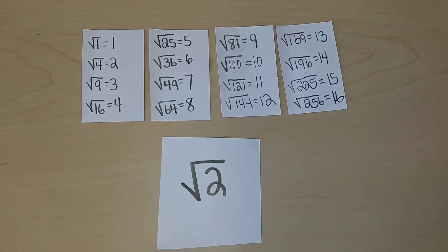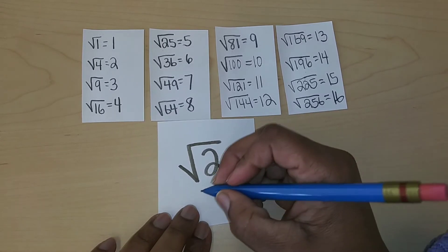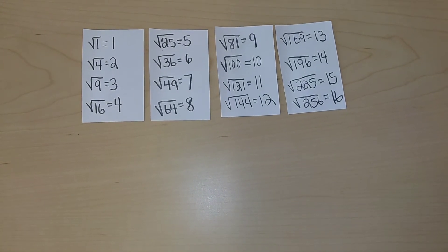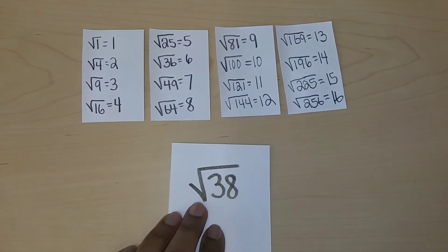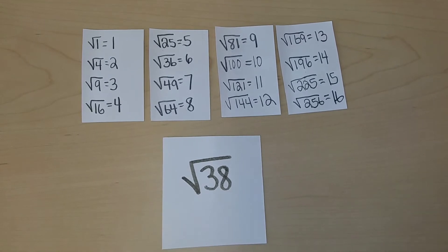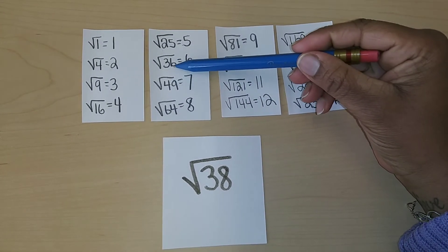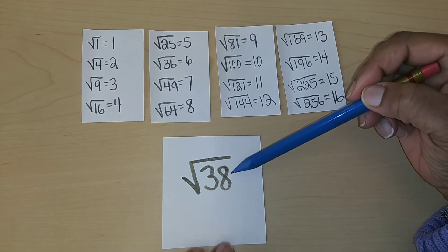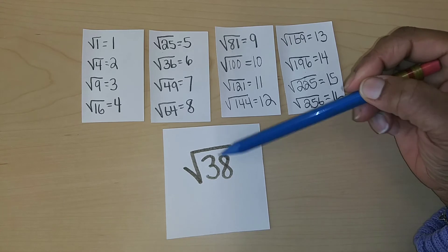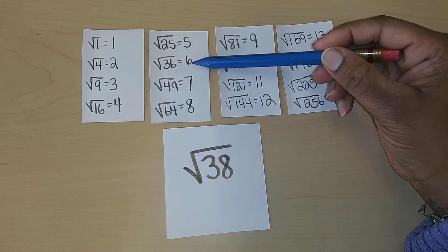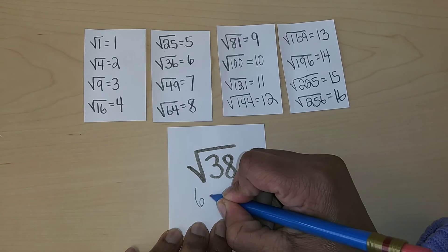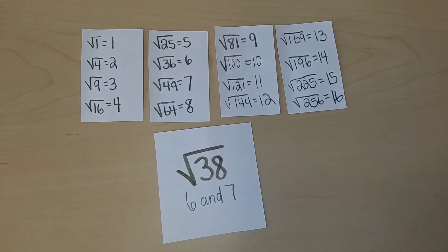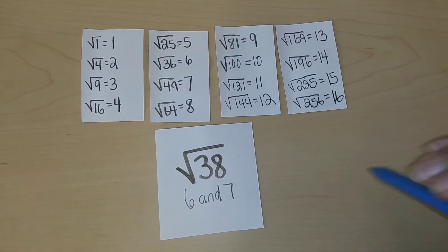Square root of 2 — that falls between 1 and 2. What about the square root of 38? The square root of 38 is actually between the square root of 36 and 49, so if I was to place it on a number line it will fall between 6 and 7. Do you think it would be closer to the whole number 6 or closer to the whole number 7? It will be closer to the whole number 6.